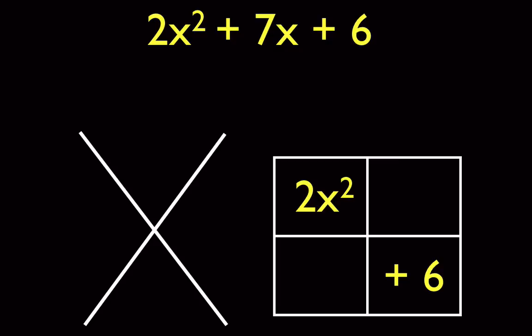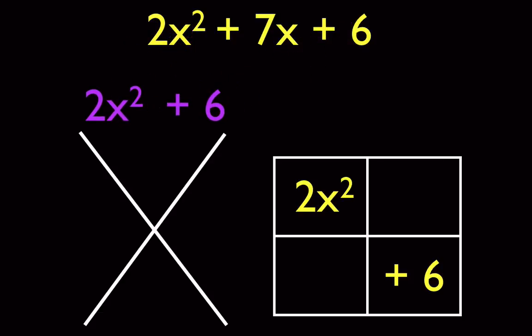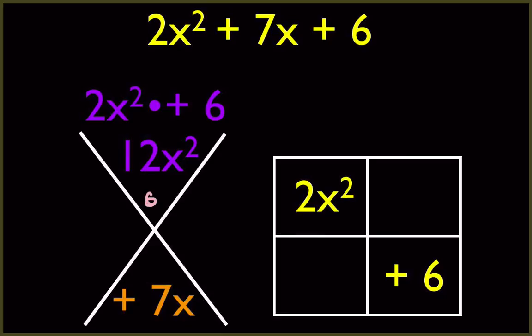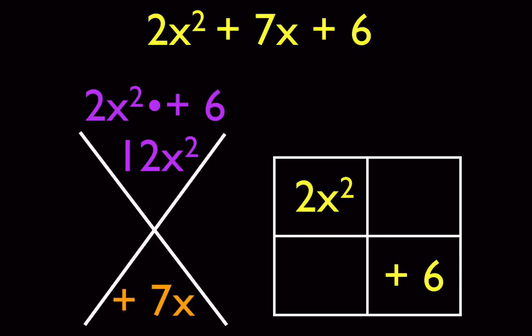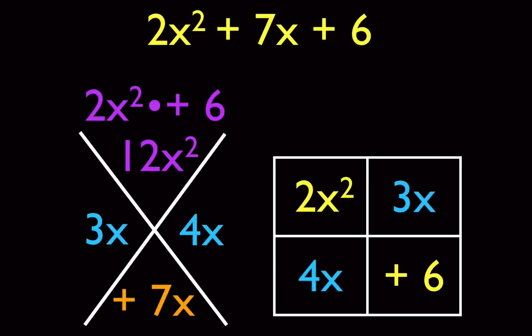The diamond problem is useful because we're looking for two numbers that are going to multiply together to equal six and add up to equal seven. In class we discovered that for this example we have to include both of the ends, so I multiply 2x squared and positive six which gives me 12x squared — that's the part being multiplied. The seven is the part being added; we're looking for the two things that add together to equal seven. That's why it goes on the bottom of a diamond problem — top is multiplication, bottom is addition. So now we look for our numbers, which are in fact 3x and 4x. Those numbers then go into our rectangle. It doesn't matter if you switched them on your paper — it's the same process.